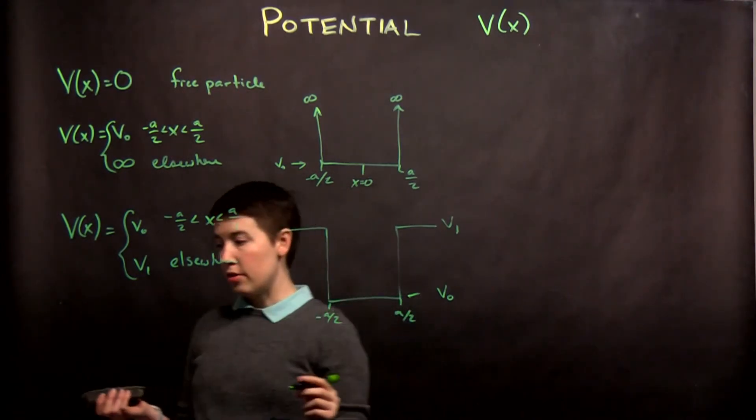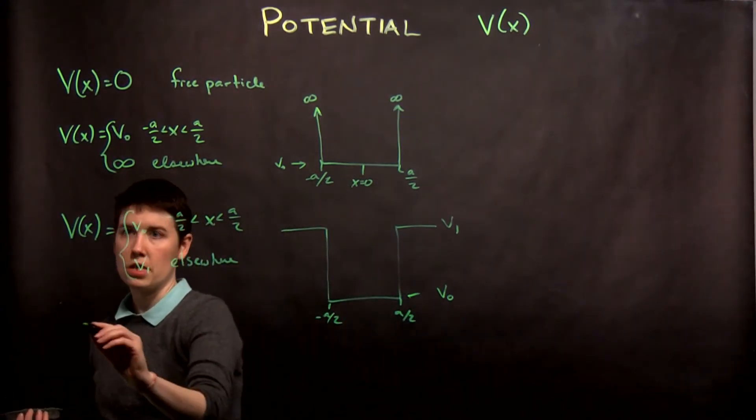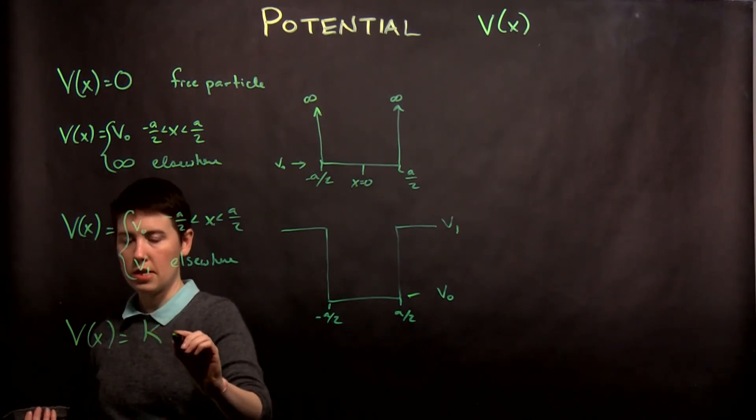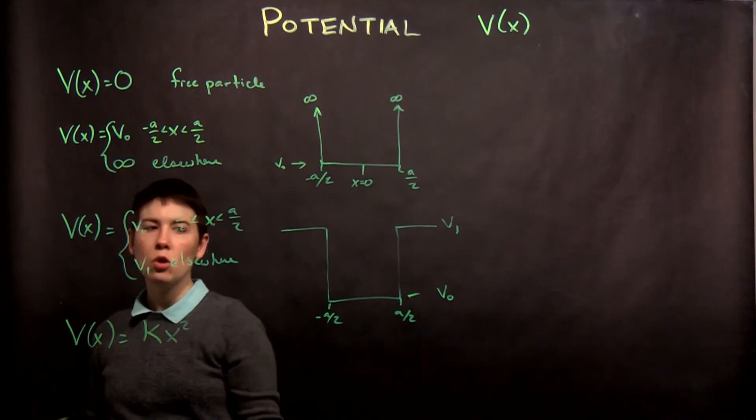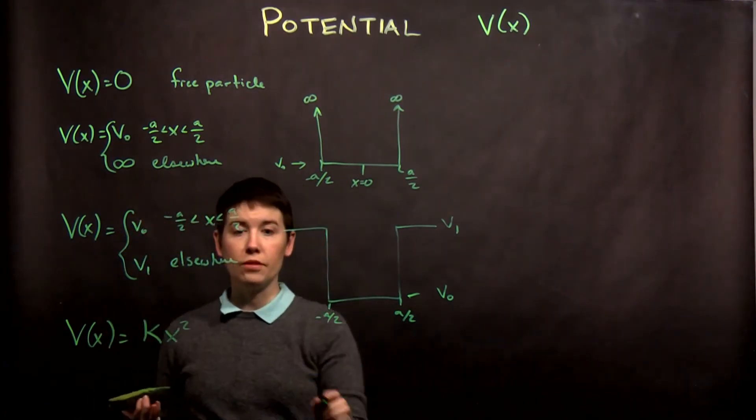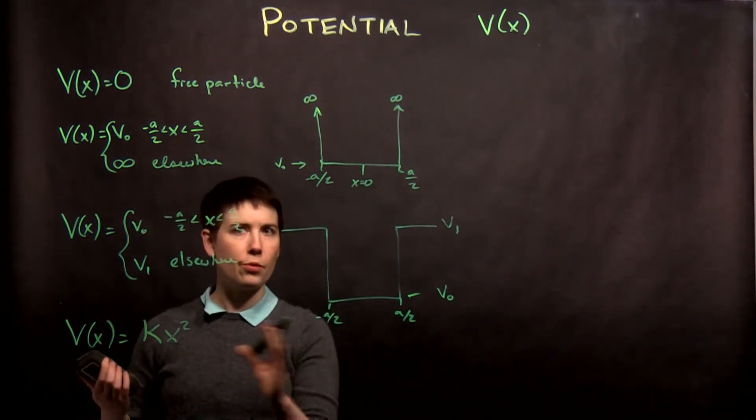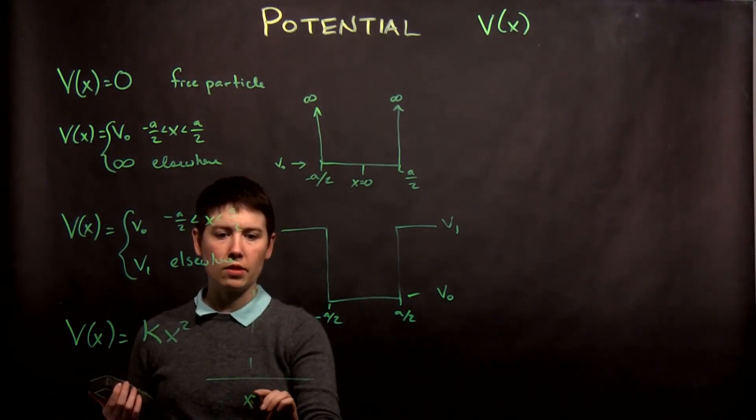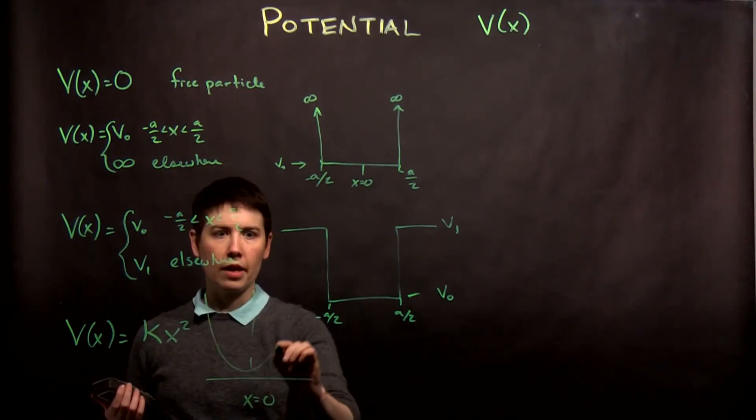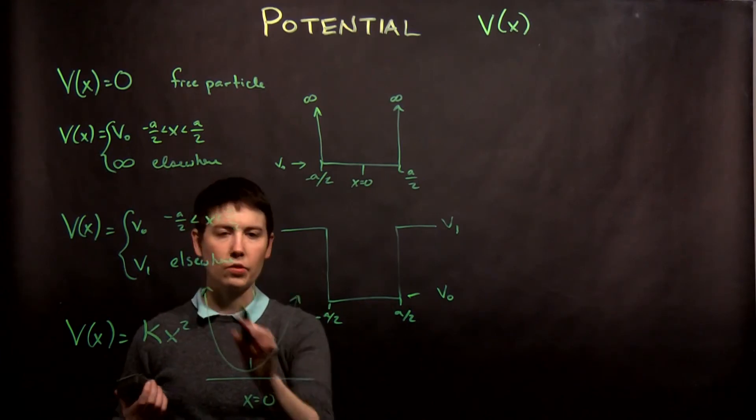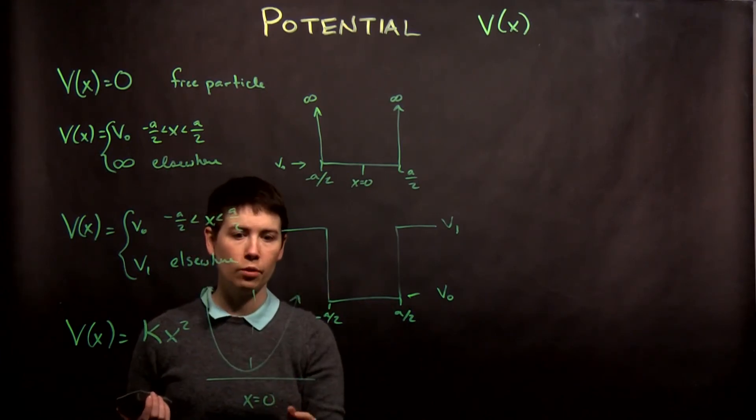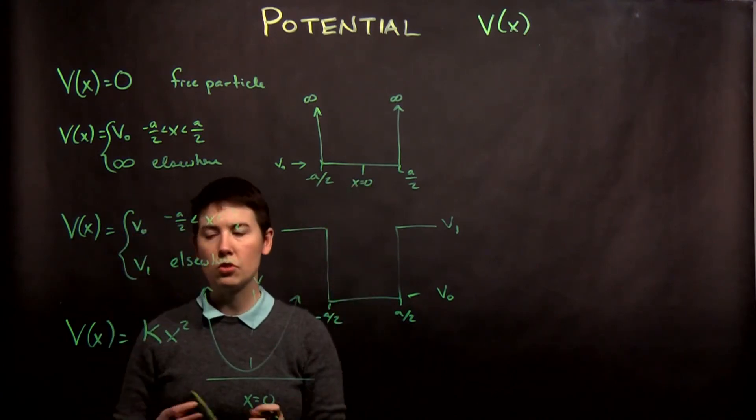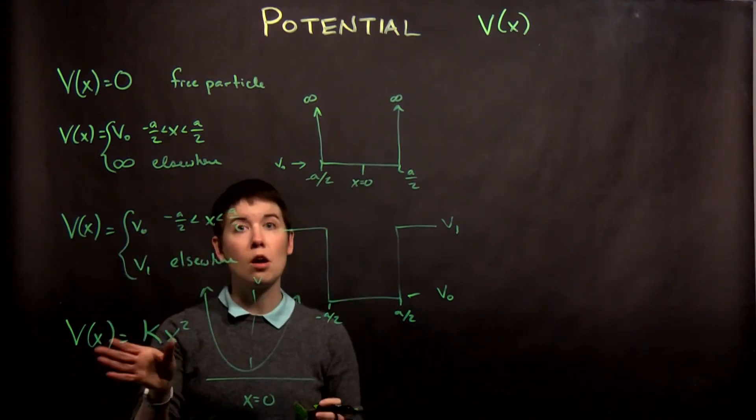So, another example is going to be the harmonic oscillator. And so that would be kx squared, or we can write that slightly differently, where maybe you have it centered at a different value. So if this is x equals zero, we then have this kind of parabola shape. Right? So again, V is what I'm plotting on this horizontal axis in each case. So this is going to be my harmonic oscillator.